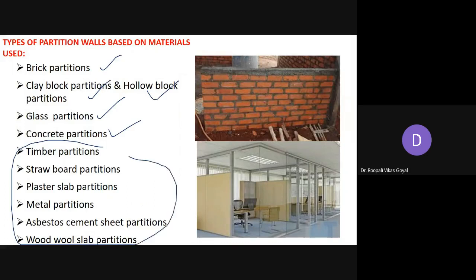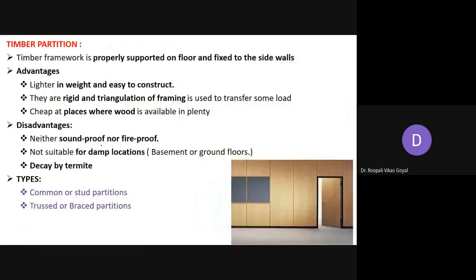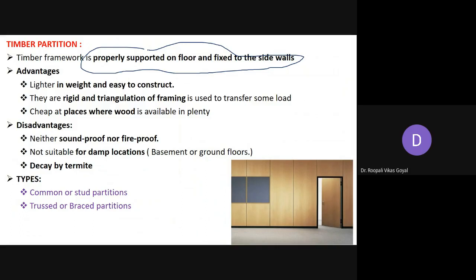First is timber partition wall. Basically, a timber framework is properly supported on the floor and fixed to the sidewalls. To construct a timber partition wall, you first prepare the timber framework, support it on the floor, fix it on both sidewalls, and then close it to complete the timber partition.